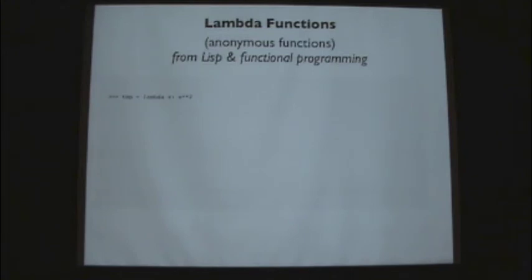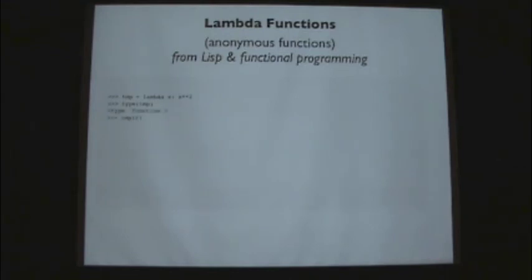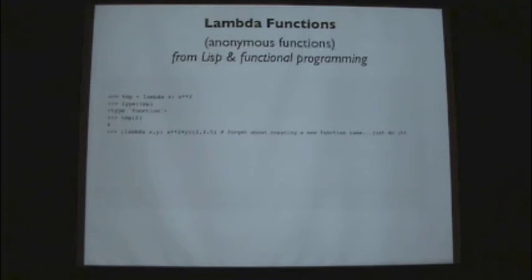The idea is instead of saying 'def', function name, and here are the different arguments, you can more or less create these little functions on the fly as needed, and you do that with this thing called lambda. Here we're going to ask for one variable assigned to x and it will return back essentially the square of that value, and we're going to call this function — even though it's now not anonymous — temp. So if I say what's type(temp), it's a function. temp(2) will assign x to 2 and return back 2 squared.